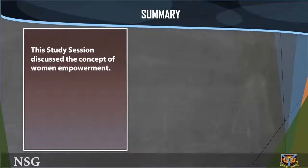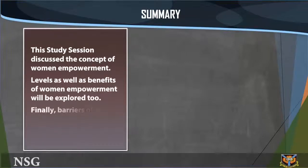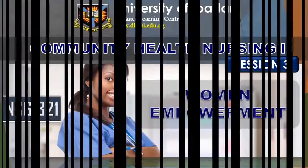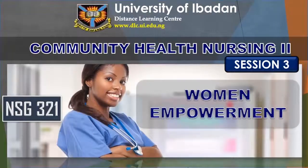Study section summary. This study section discussed the concept of women empowerment. Levels as well as benefits of women empowerment were explored. Finally, barriers of women empowerment were examined. Now we've come to the end of Study Section 3. Thanks for listening.